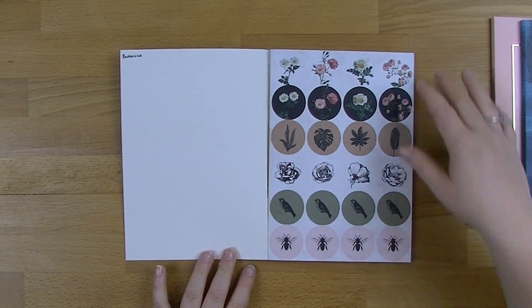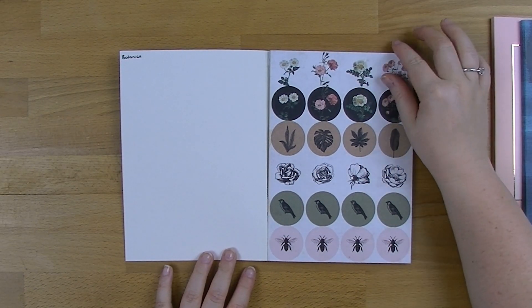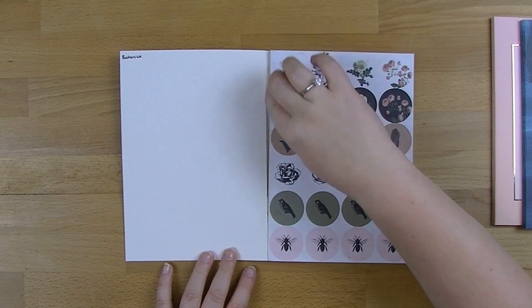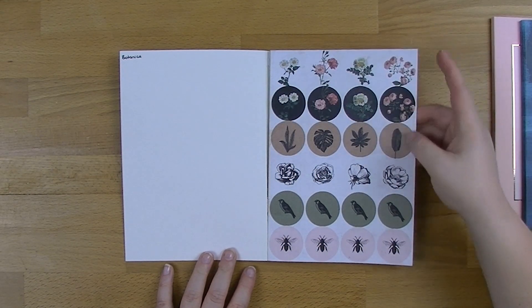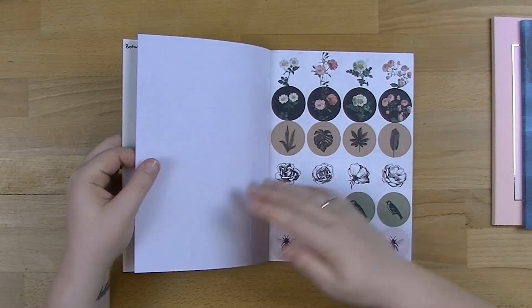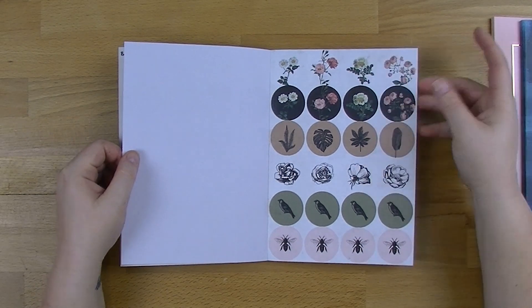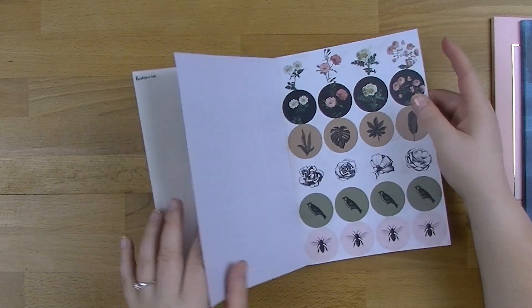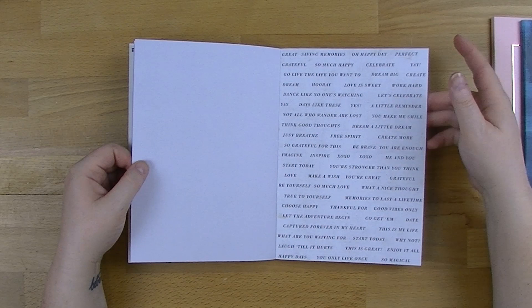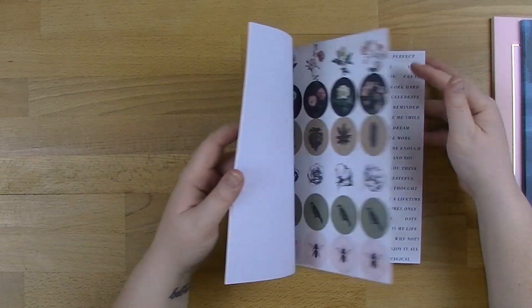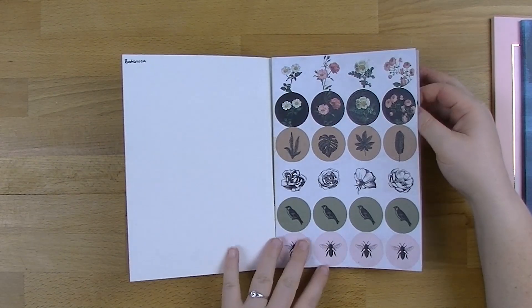So this is the Botanica one. I've had a very quick flick through this one just because I have a little bit of damage to my book. I'm not worried, it's not that bad but there is just a little bit and I think it's just because it's the first sort of run through. So the name kind of gives away what is all of this. It's all sort of flowers and birds and things like that.